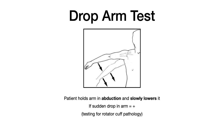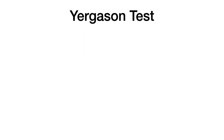The drop arm test is super simple — the name tells you what's happening. This test is testing for rotator cuff pathology. The patient holds their arm straight out in abduction and slowly lowers it. If there's a sudden drop — instead of a slow controlled lowering — along with discomfort or pain, that's a positive test signifying rotator cuff pathology. If their arm drops, the drop arm test is positive.